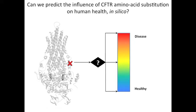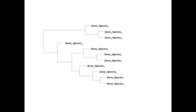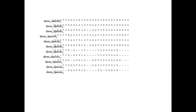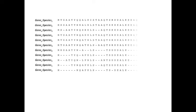A common computational approach to this sort of problem is a sequence-based approach where you take a group of genes including your gene of interest and you align their sequences. And then from the multiple sequence alignment, you can infer things about substitution tolerance at different positions in your gene of interest. Sometimes these methods work reasonably well,